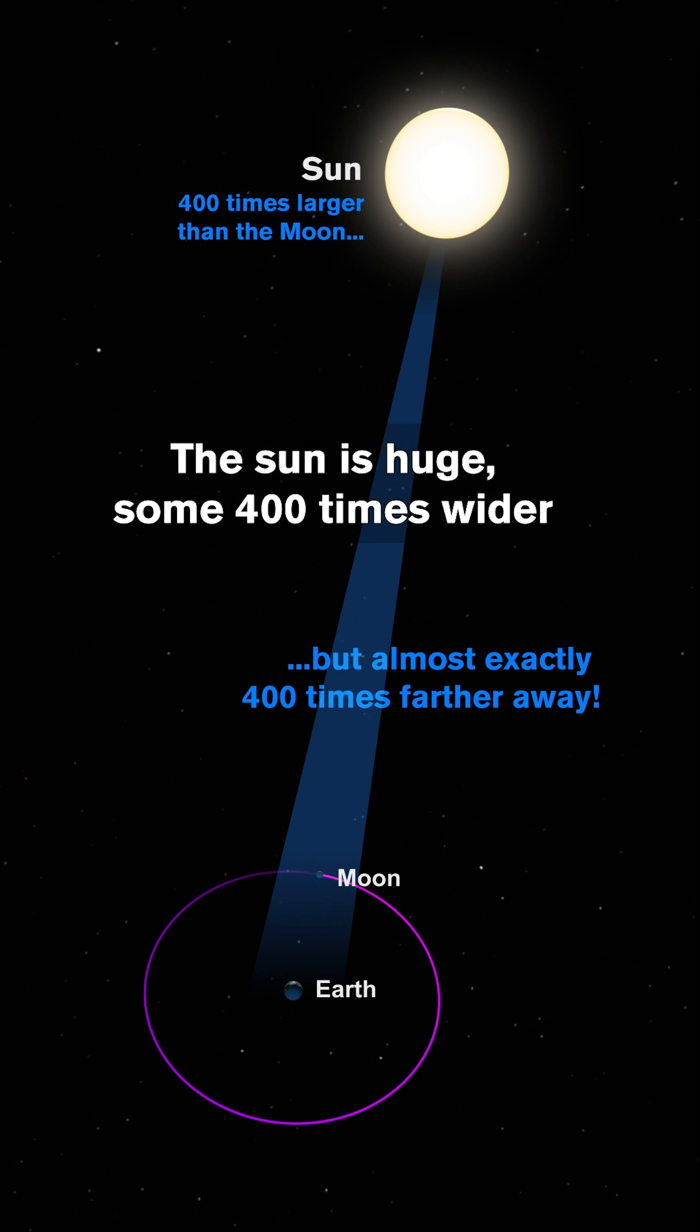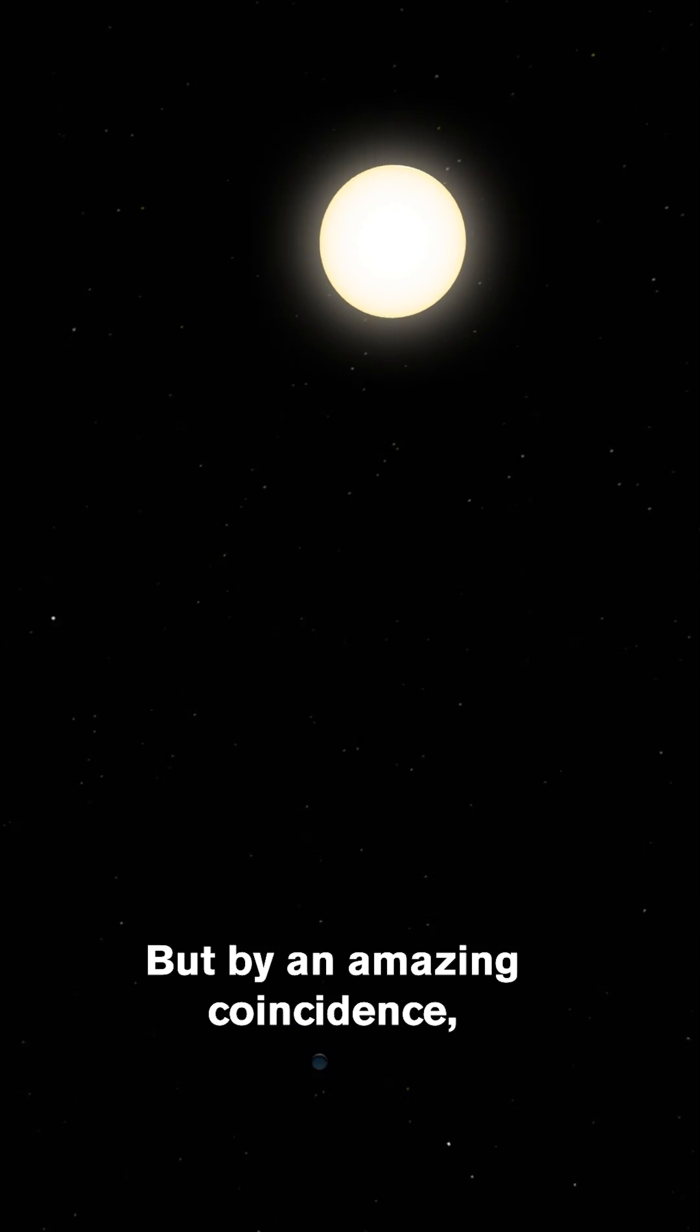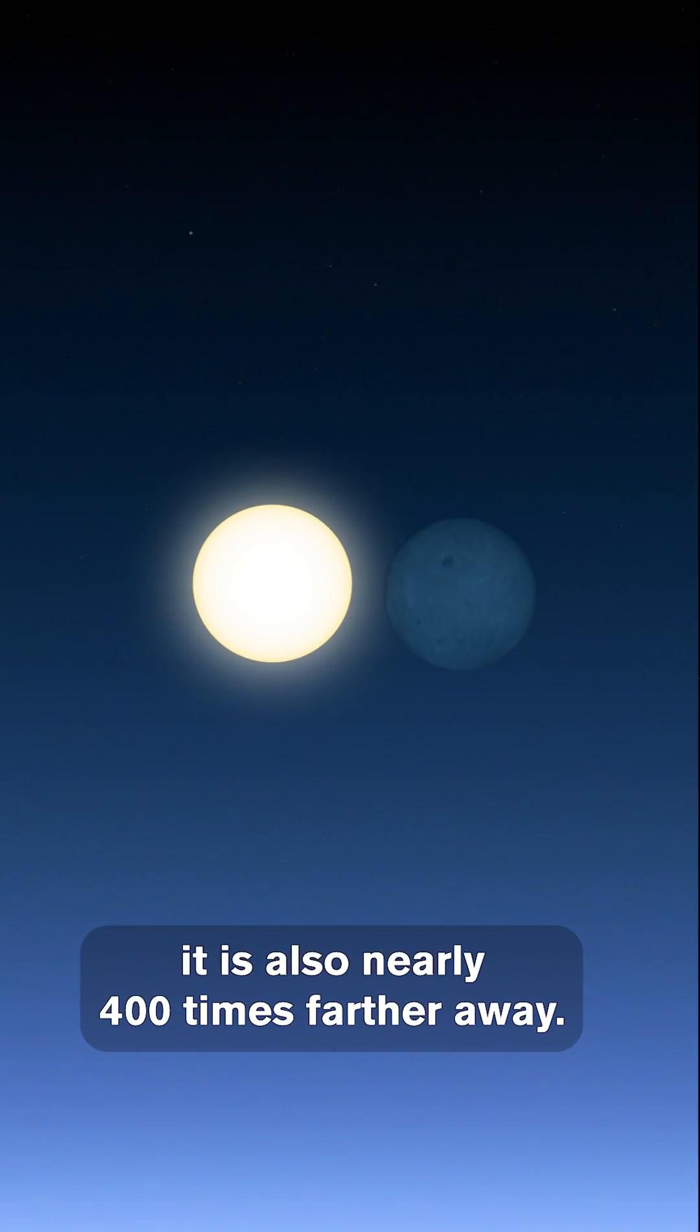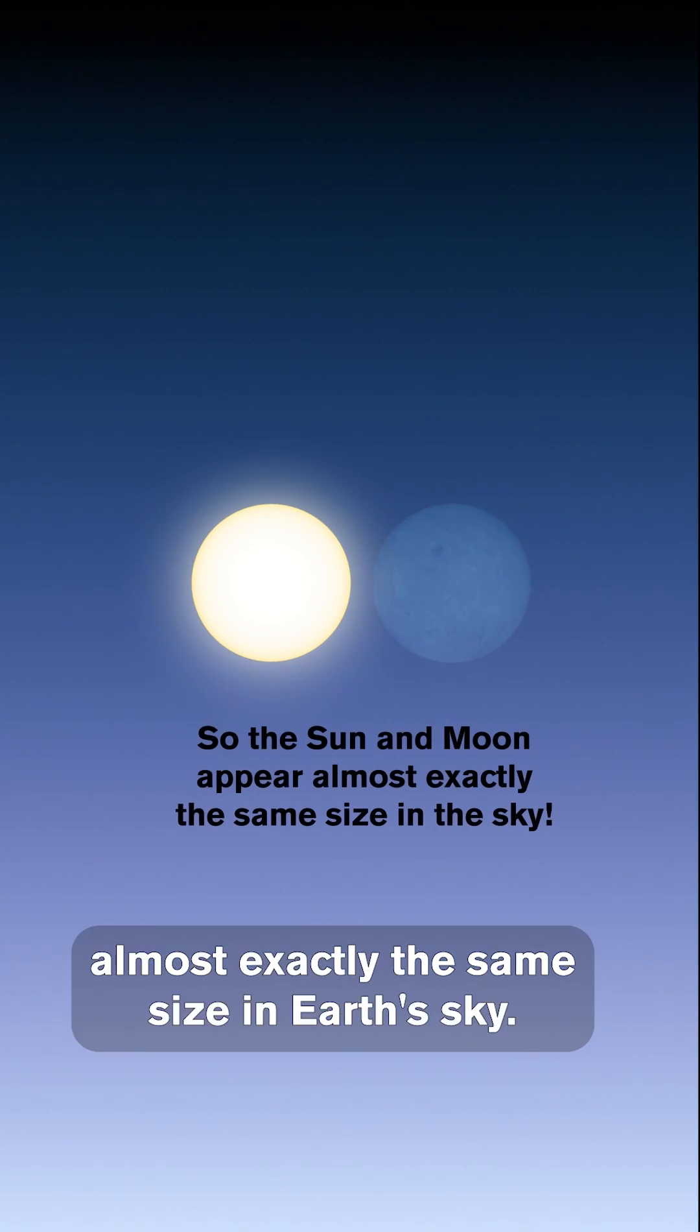The Sun is huge, some 400 times wider than the Moon. But by an amazing coincidence, it is also nearly 400 times farther away. So the two objects appear almost exactly the same size in Earth's sky.